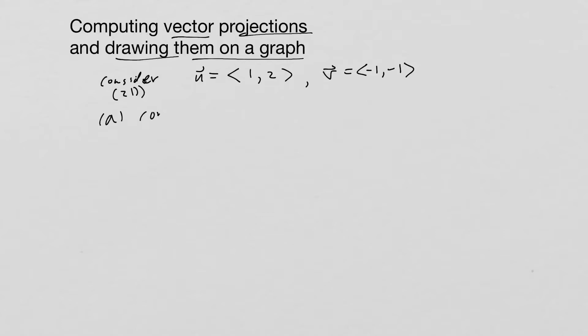So part A is compute the projection of u in the direction of v. Okay, so I'm going to compute that. So let's recall the answer is: recall that the projection of u in the direction of v is equal to (u·v / ||v||²) times v.